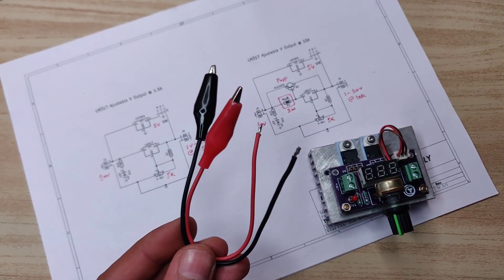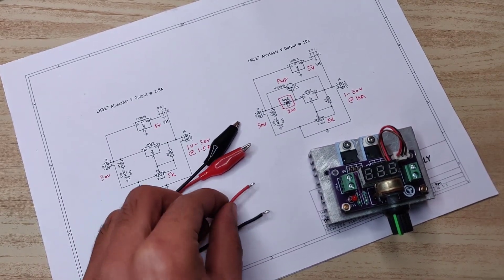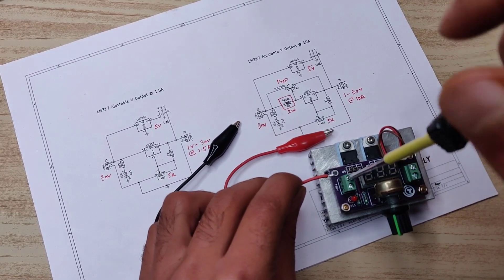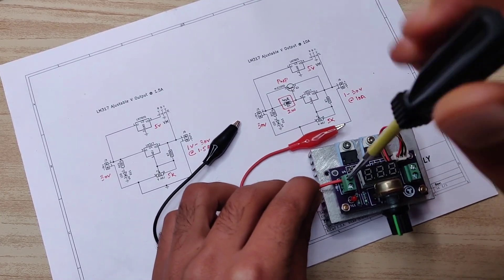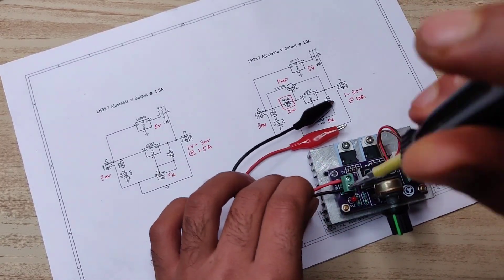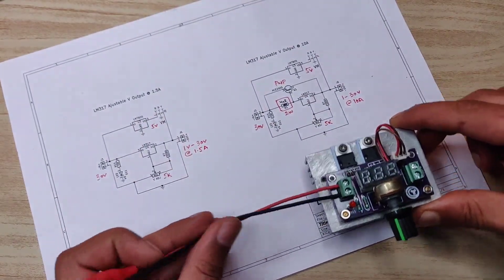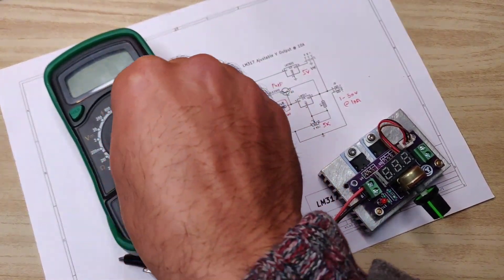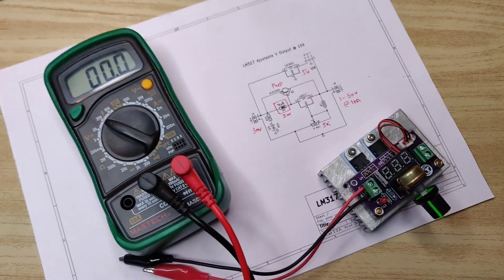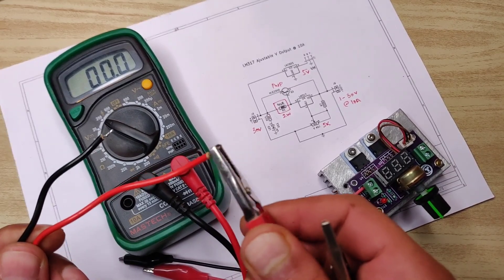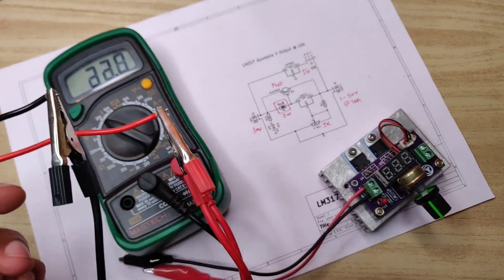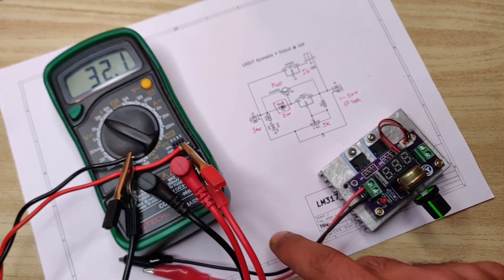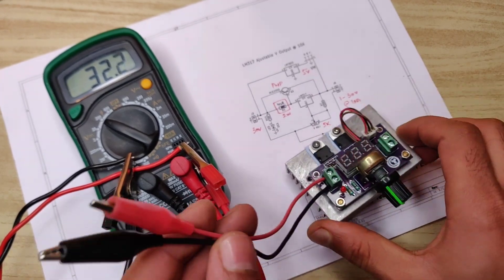I used these alligator clips to connect input supply of 30 volts. I will use multimeter to monitor input voltage and output can be seen on voltmeter. As you can see, input is 32 volts. Now let's connect the circuit.